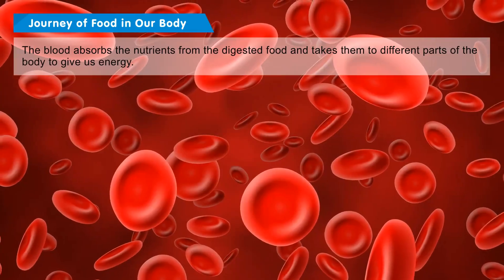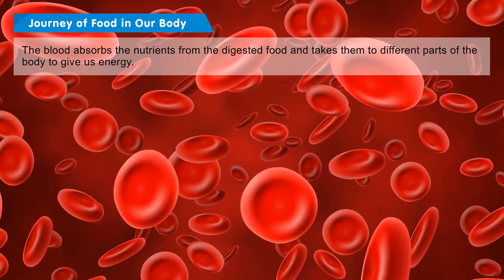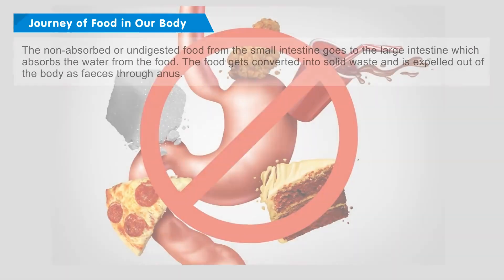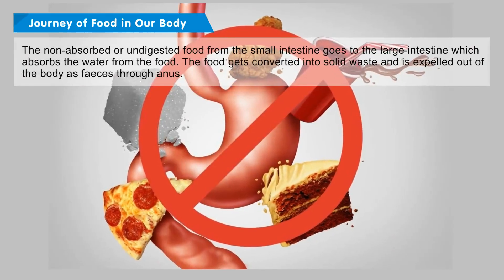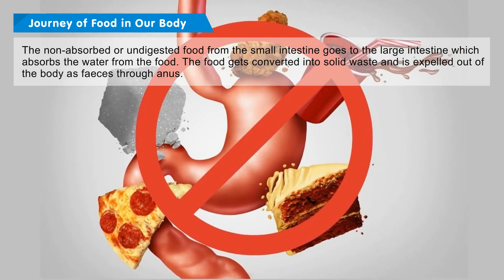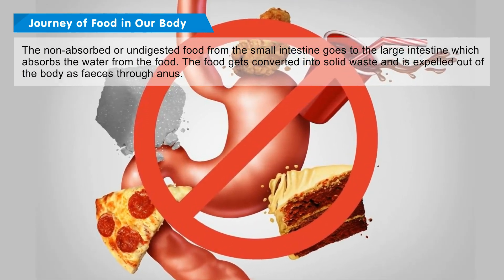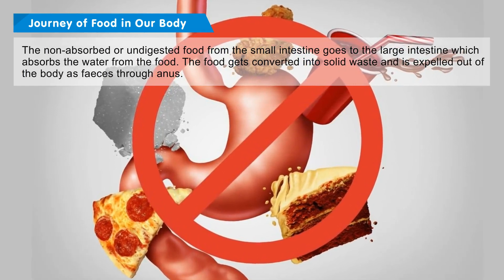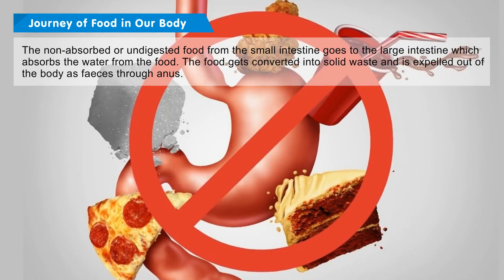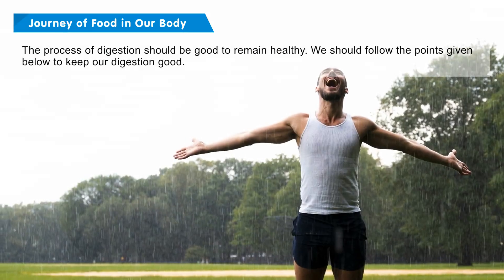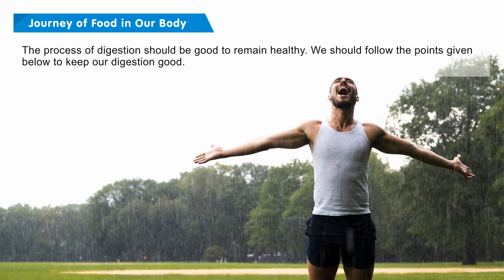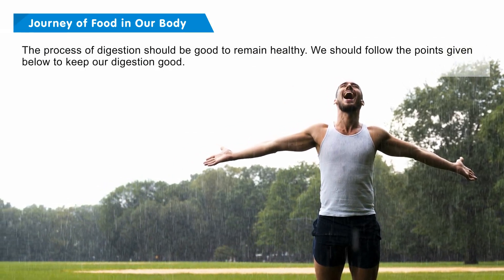This completely digested food passes through the walls of the small intestine into the bloodstream. The blood absorbs the nutrients from the digested food and takes them to different parts of the body to give us energy. The undigested food from the small intestine goes to the large intestine, which absorbs the water from the food. The food gets converted into solid waste and is expelled out of the body as faeces through the anus. The process of digestion should be good to remain healthy.